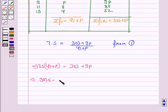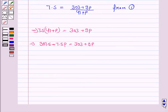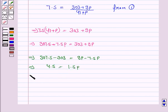7.5 into P is 7.5P, equal to 303 plus 9P. This implies 307.5 minus 303 is equal to 9P minus 7.5P. So 4.5 is equal to 1.5P. Therefore P is equal to 4.5 upon 1.5, so P is equal to 3.